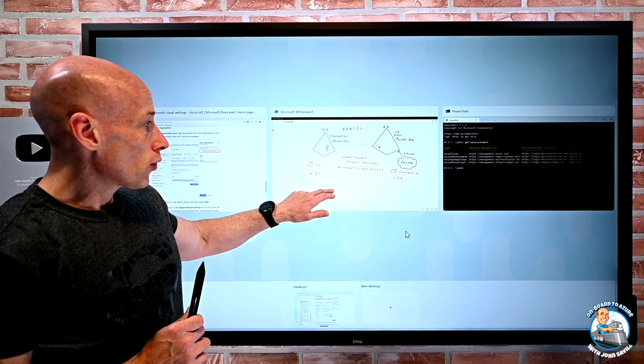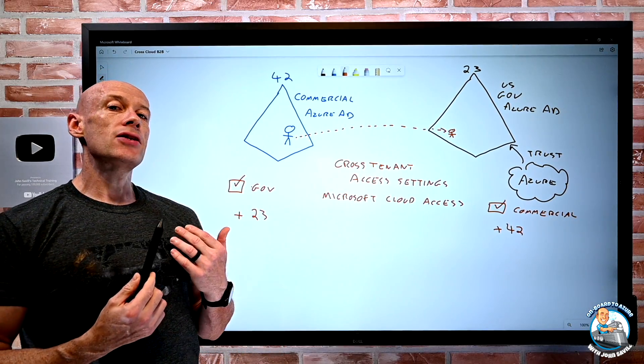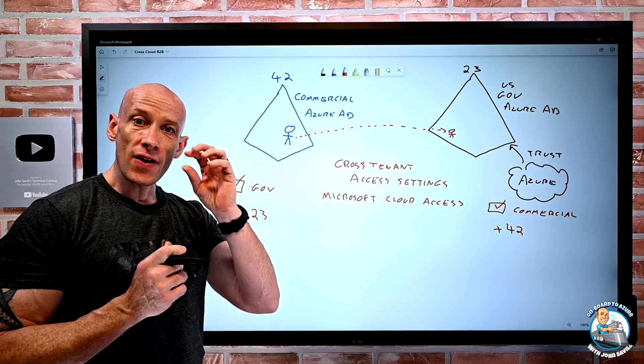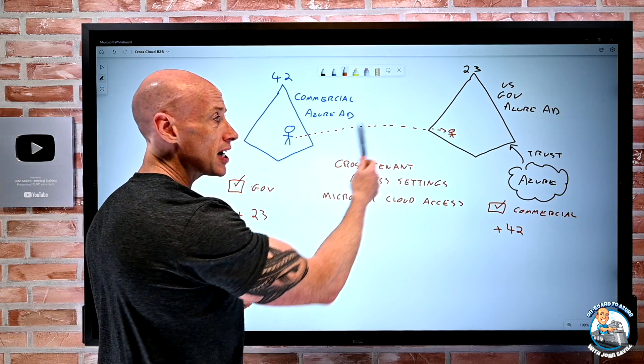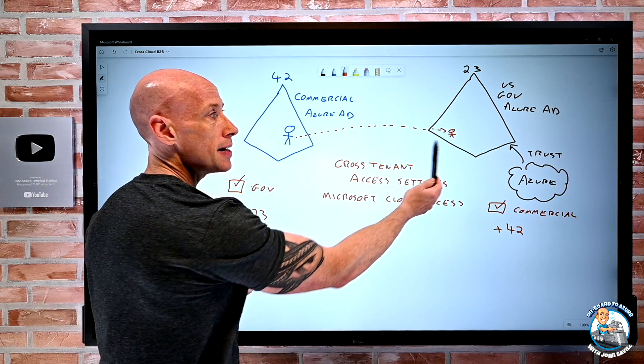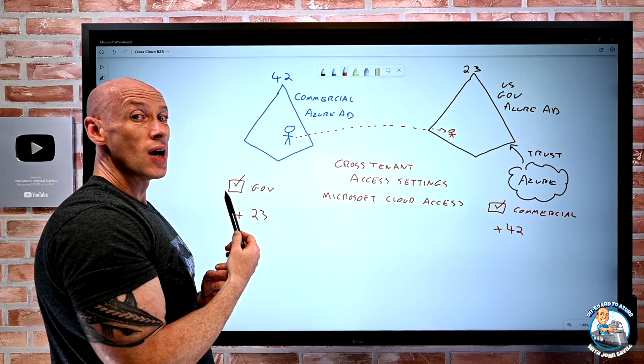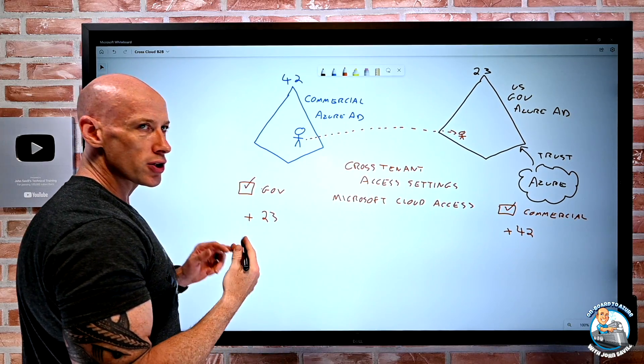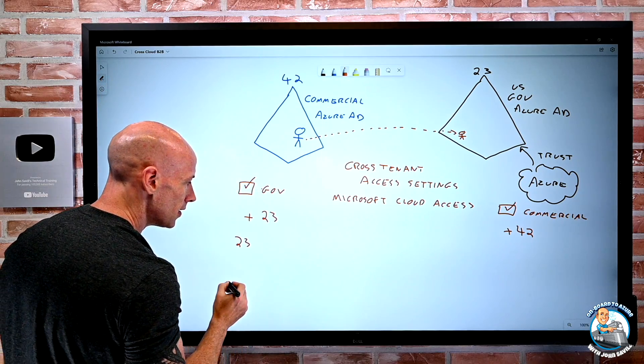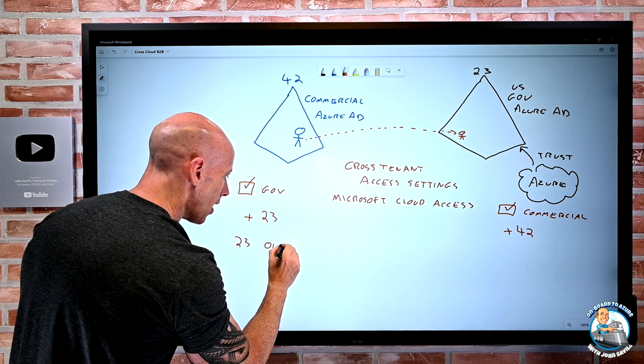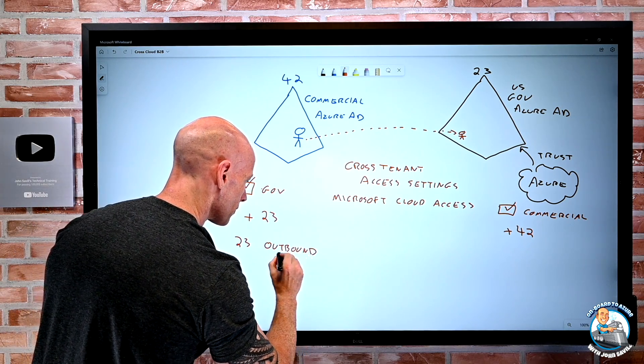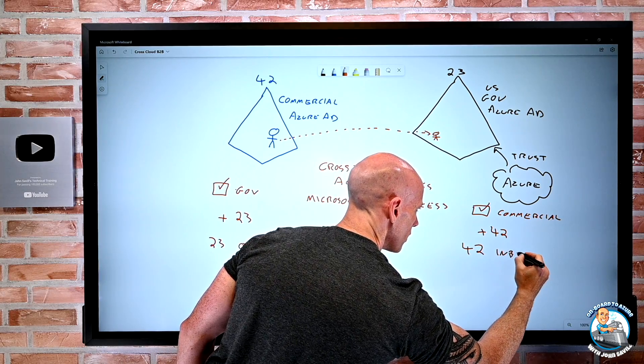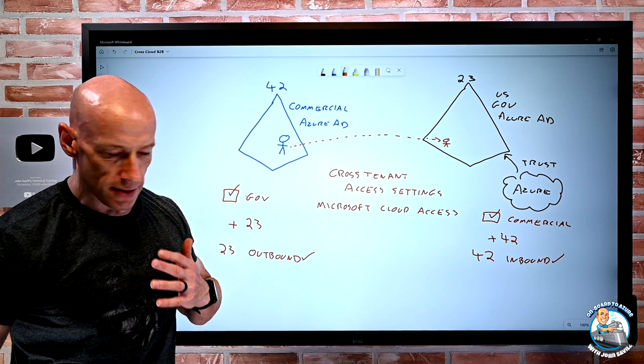So once you've done that, once you've added the other tenant ID, now I need to go and enable whatever the direction of the relationship is I want to do. So there's both inbound and outbound settings. Now I might say this is only going to be one way, because all I want to do is in my gov Azure AD, allow guests from commercial. I do not want people in my gov Azure AD to be added as guests into my commercial. So then as part of those cross-tenant access settings, the settings I have for 23, this is outbound, so I would allow outbound. And then on this side for 42, the commercial, I'm going to enable inbound.